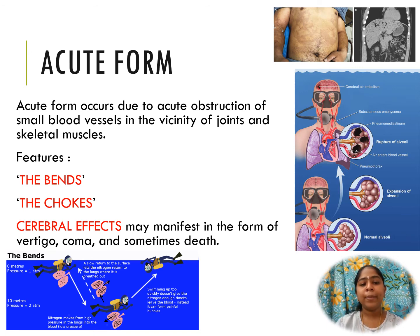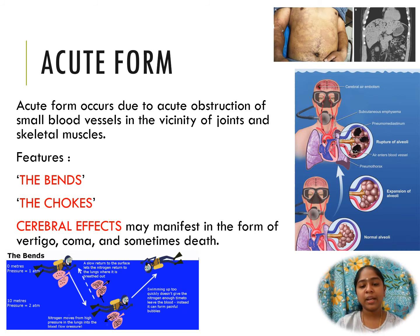What are bends? The patient doubles up in bed due to acute pain in joints, ligaments, and tendons. Chokes occur due to accumulation of bubbles in the lungs, resulting in acute respiratory distress. Cerebral effects manifest in the form of vertigo, coma, and sometimes death. Pictures representing the chokes, cerebral effects, and the bends can be seen above.